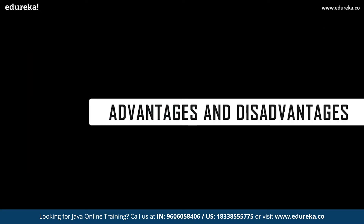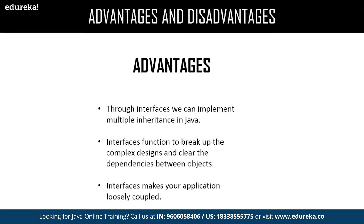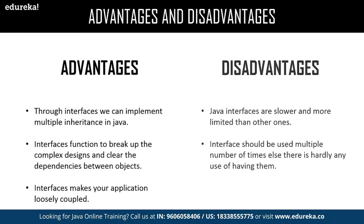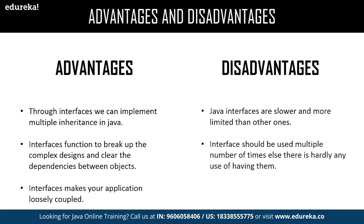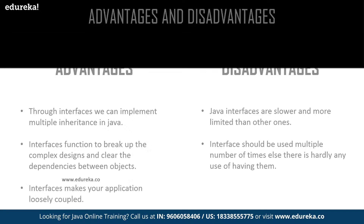Now let us get into the major advantages and disadvantages of interface. Advantages: we can achieve multiple inheritance in Java, we can easily break up complexity and enable clear dependency between objects, and we can achieve loosely coupled applications through an interface. Disadvantages: Java interfaces make the application slower when compared to competitors like Python which support multiple inheritance natively. Also, once an interface is included in an application, it might be used once in a while or end up being used multiple times at a larger scale.